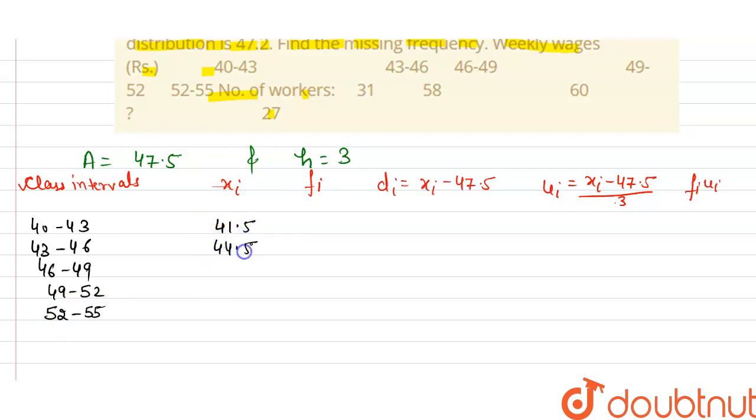Here fi's are 31, 58, 60, and this is the missing frequency, and that is 27. Now let this missing frequency be f.